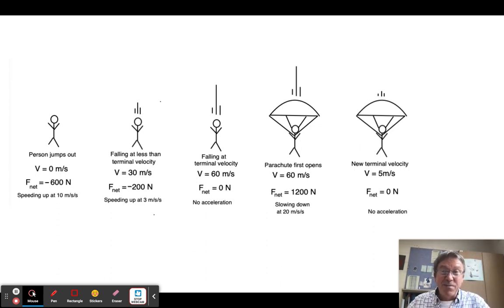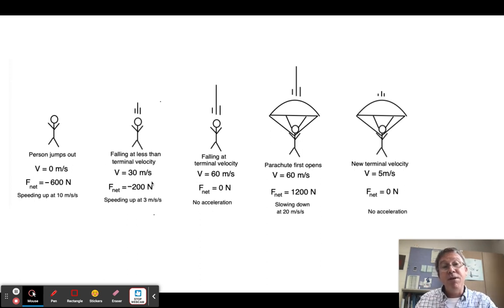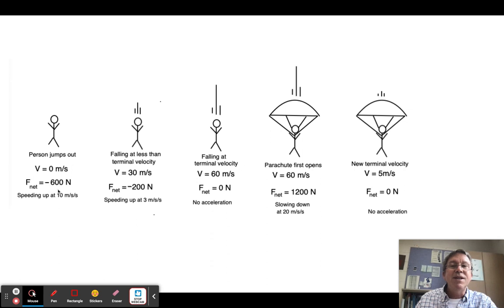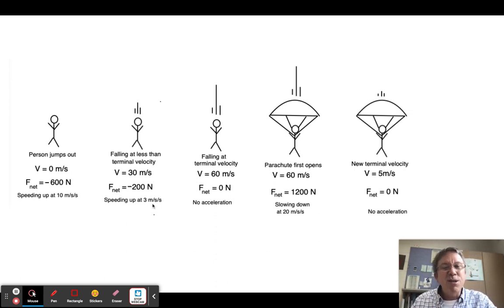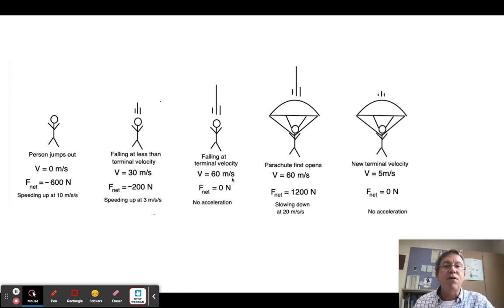A person jumps out of an airplane. The moment they jump out, their downward velocity is zero. It's a 60 kilogram person, so they're being pulled down by 600 Newtons—that's the net force since there's only gravitation—so they speed up at 10 meters per second squared. If we check in after they've been falling a bit, now the person is going 30 meters per second. They're bumping into air molecules, so there's an upward force as well. Instead of a net downward of 600, now it's only 200 Newtons downward—still speeding up, but now only at 3 meters per second squared instead of 10. Check in a little bit later and they're going 60 meters per second. The net force is zero because the drag force upward equals the gravitational force downward, so they stop accelerating and continue to fall at 60 meters per second.